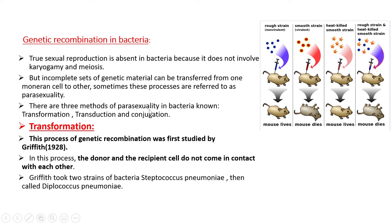There are three methods of parasexuality in bacteria: transformation, transduction, and conjugation. In transformation, something is transformed — this is the process Griffith first studied in 1928. We will see in detail how he conducted the experiment and named the process transformation, in which the donor and recipient cell do not come in contact with each other.